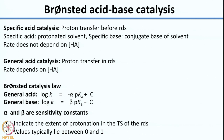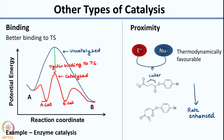We looked at specific acid catalysis, where proton transfer takes place before the rate-determining step and the rate depends only on the protonated solvent concentration, not on HA. General acid catalysis involves proton transfer in the rate-determining step, so the rate depends on HA concentration. We also derived the Bronsted catalysis law, where alpha and beta are sensitivity constants indicating the extent of protonation in the transition state of the rate-determining step, with values between 0 and 1.